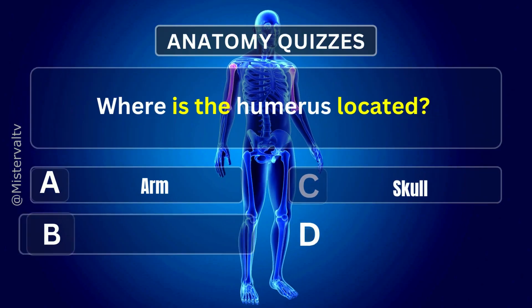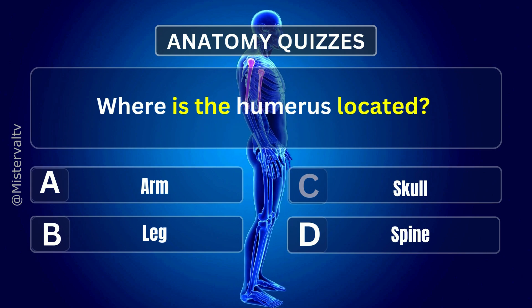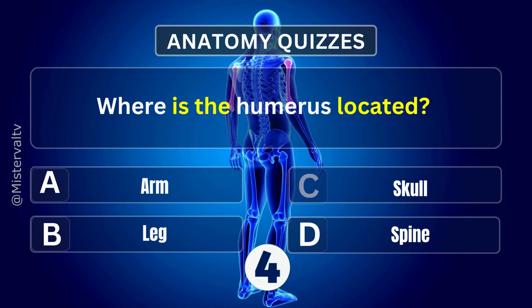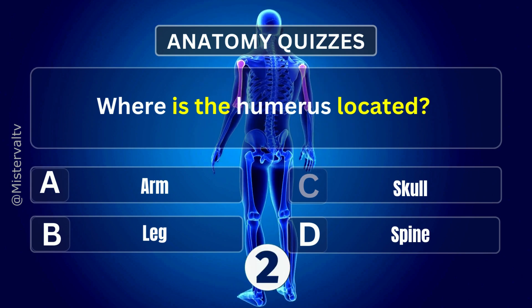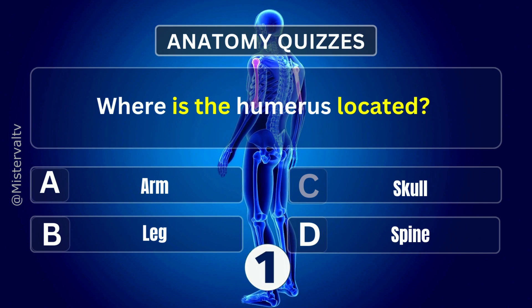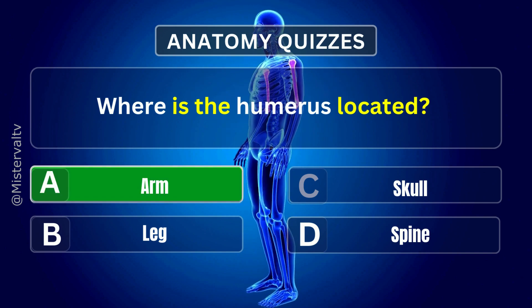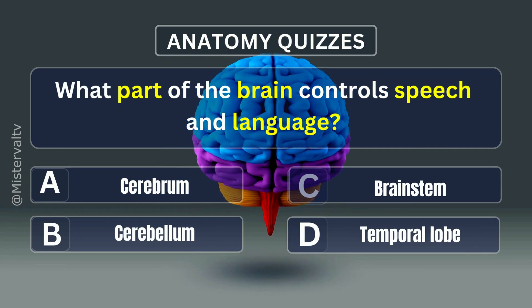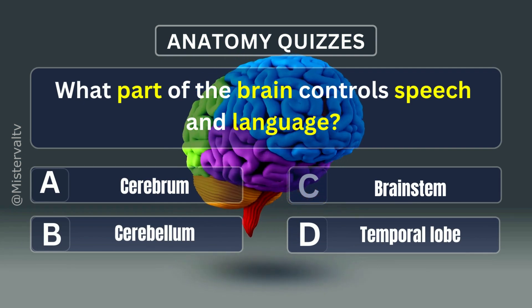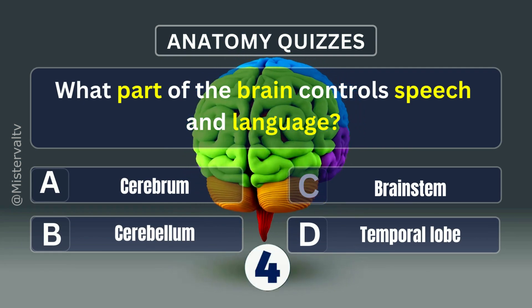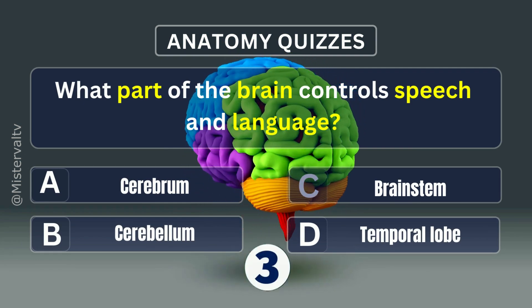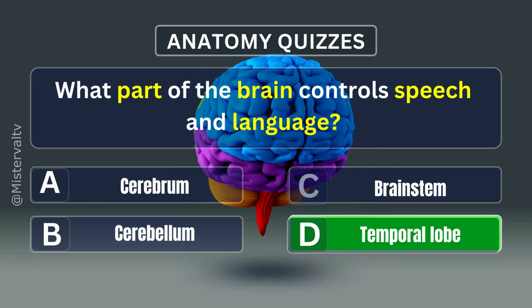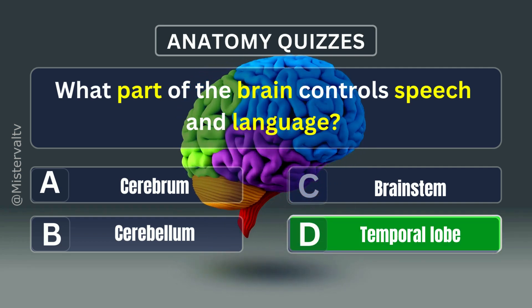Where is the humerus located? Answer. A. Arm. What part of the brain controls speech and language? Answer. D. Temporal lobe.